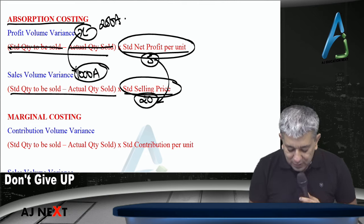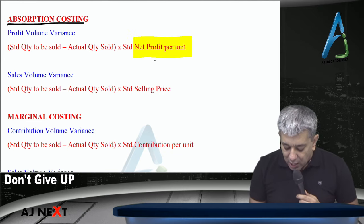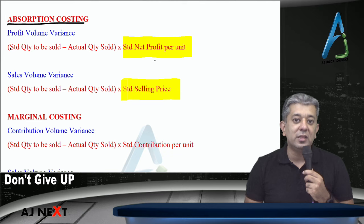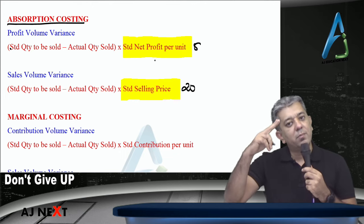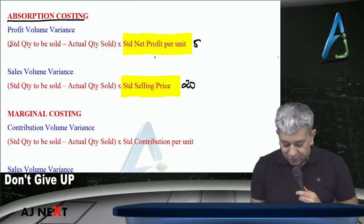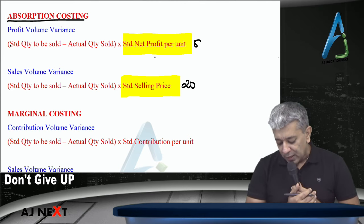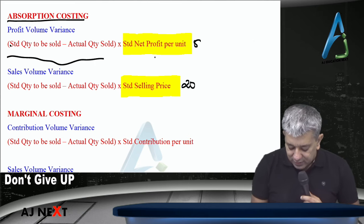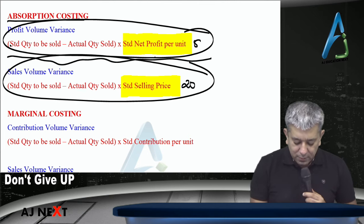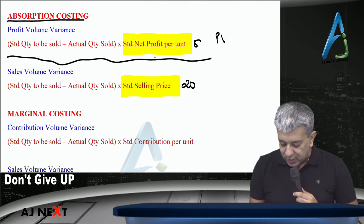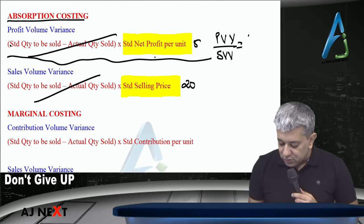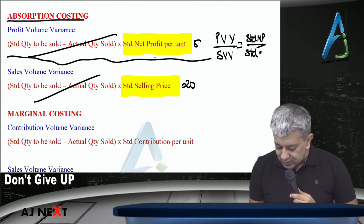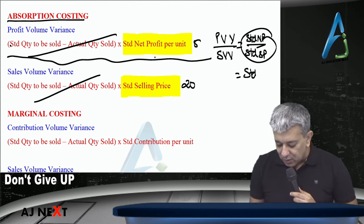The ratio between the figures outside the bracket will become the ratio between the variances also. So if the ratio was 5 to 20, then the ratio of the variances will also be 5 to 20. That was absorption costing. If you want a formula, let's divide the profit volume variance equation by the sales volume variance equation. On the right-hand side, the bracket and denominator cancel, giving: profit volume variance divided by sales volume variance equals standard net profit divided by standard selling price.